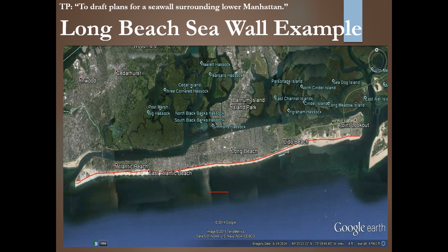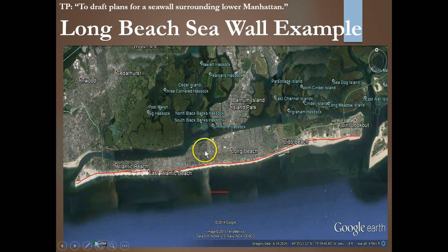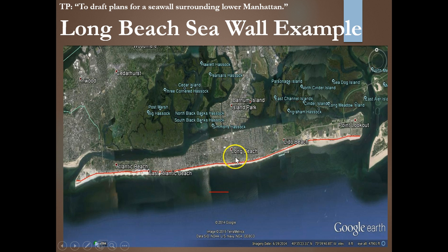Let's look at an example. Tomorrow we're going to do lower Manhattan, but let's go through an example of Long Beach. If any of you have been to Long Beach, the beach is right along the bottom and the elevation doesn't change too much going inland, so when a storm comes in it just destroys the homes in the area. During Hurricane Sandy, I actually had some friends who had to be evacuated — their car, their house, their couch, their TV, everything was destroyed. Really horrible stuff.